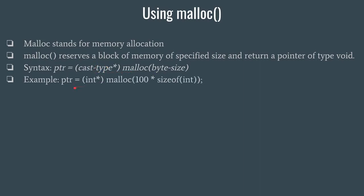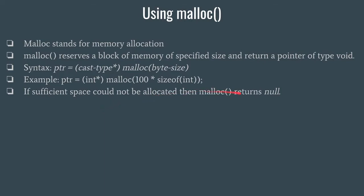The byte_size means the size of whatever type you are using — for int it is 4 bytes. For example: ptr = (int*) malloc(100 * sizeof(int)). Here the type is int, so we write sizeof(int) which is 4 bytes. This means 100 blocks of space will be allocated to this pointer — 100 multiplied by 4 equals 400, so 400 bytes of space are allocated on the heap. If sufficient space cannot be allocated, malloc will return NULL.